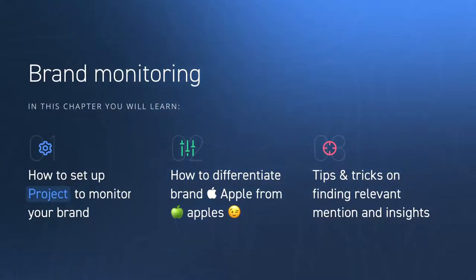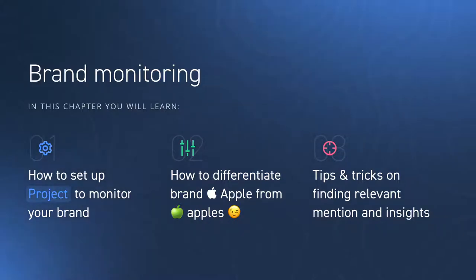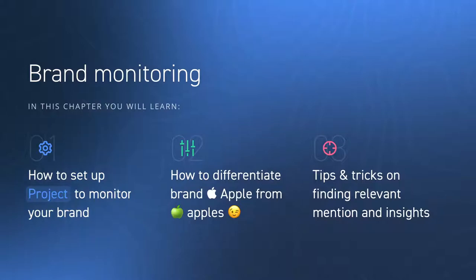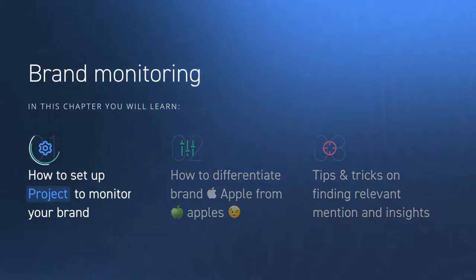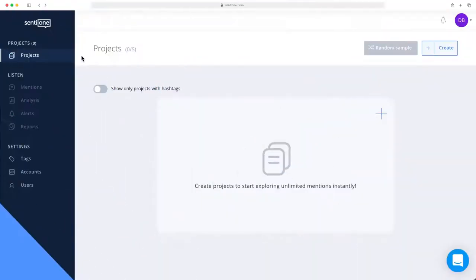Brand monitoring. In this chapter, you'll learn how to set up projects to monitor your brand and how to differentiate the brand Apple from Apple's, and also tips and tricks on finding relevant mentions and insights. In order to navigate through all the content online — posts, comments, and articles — we need to create projects with the right keywords that will narrow down our search.